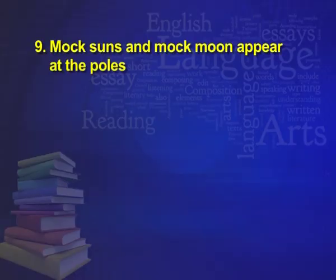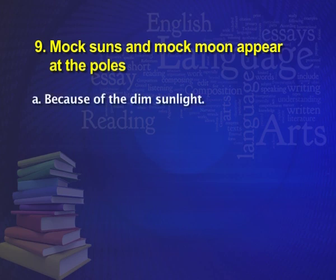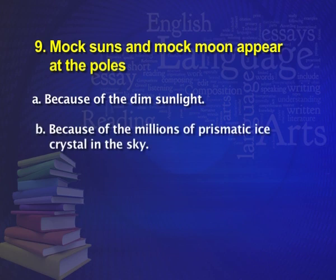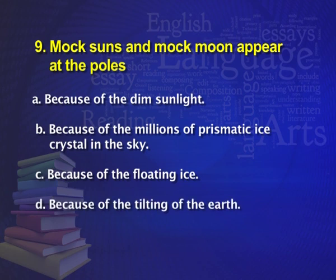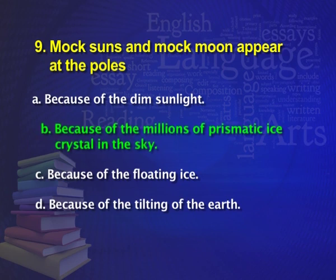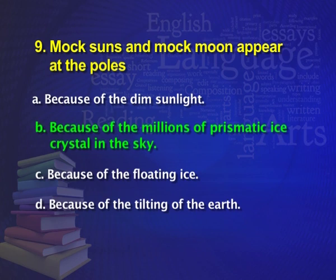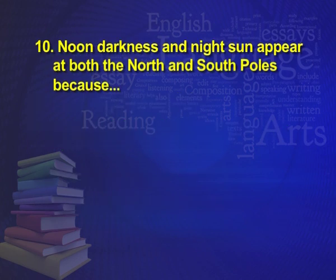Mock suns and mock moons appear at the poles. Option A: because of the dim sunlight. Option B: because of the millions of prismatic ice crystals in the sky. Option C: because of the floating ice. Option D: because of the tilting of the earth. The right answer is B — because of millions of prismatic crystals in the sky.